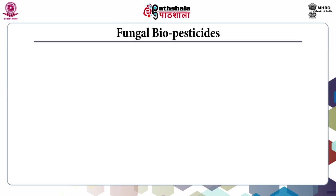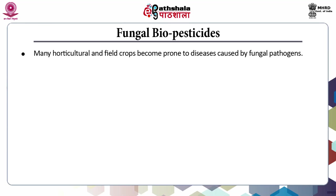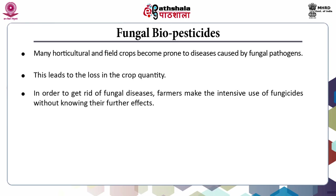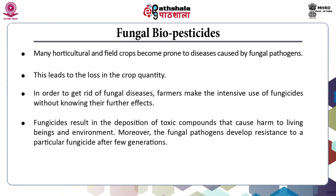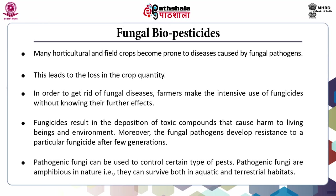The next classification of microbial biopesticides is fungal biopesticides. Many horticultural and field crops become prone to diseases caused by fungal pathogens, leading to loss in crop quantity. To get rid of fungal diseases, farmers make intensive use of fungicides without knowing their further effects. Fungicides result in deposition of toxic compounds that cause harm to living beings and the environment. Moreover, fungal pathogens develop resistance to a particular fungicide after few generations. Pathogenic fungi can be used to control certain types of pests and are amphibious in nature, surviving in both aquatic and terrestrial habitats.